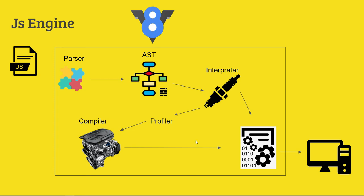This is the V8 engine. You can see that an image of a car engine is used. The reason is that the V8 engine is named after a car's V8 engine. The interpreter used by V8 is called Ignition — named after the spark plug. The optimizing compiler is called TurboFan.